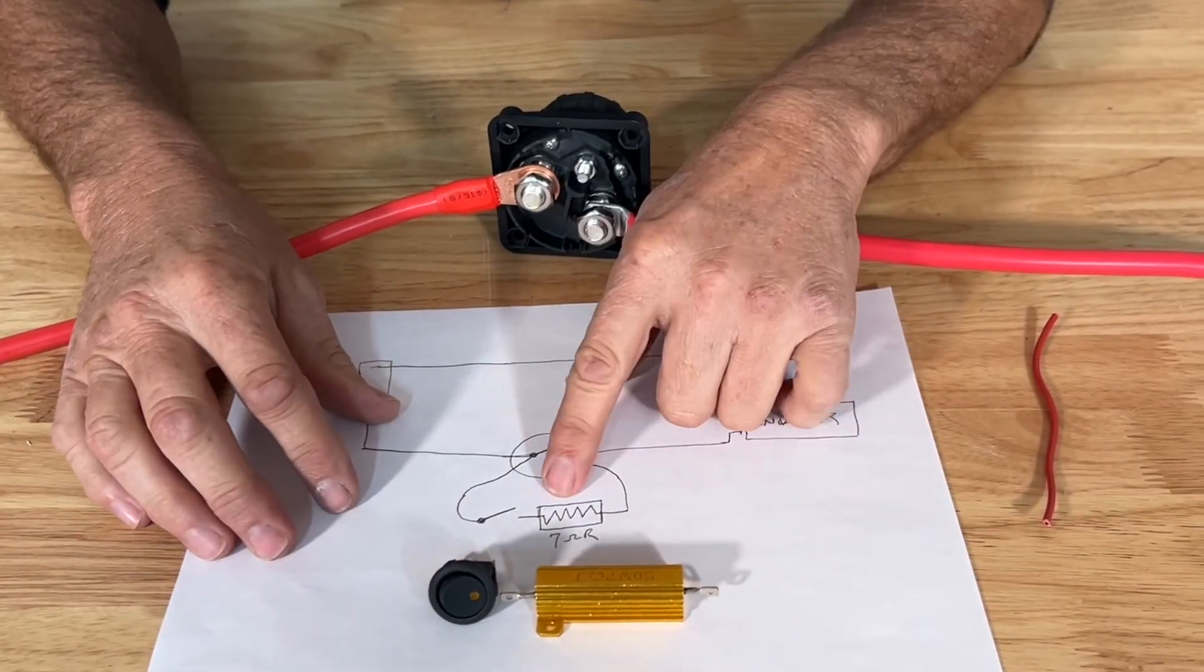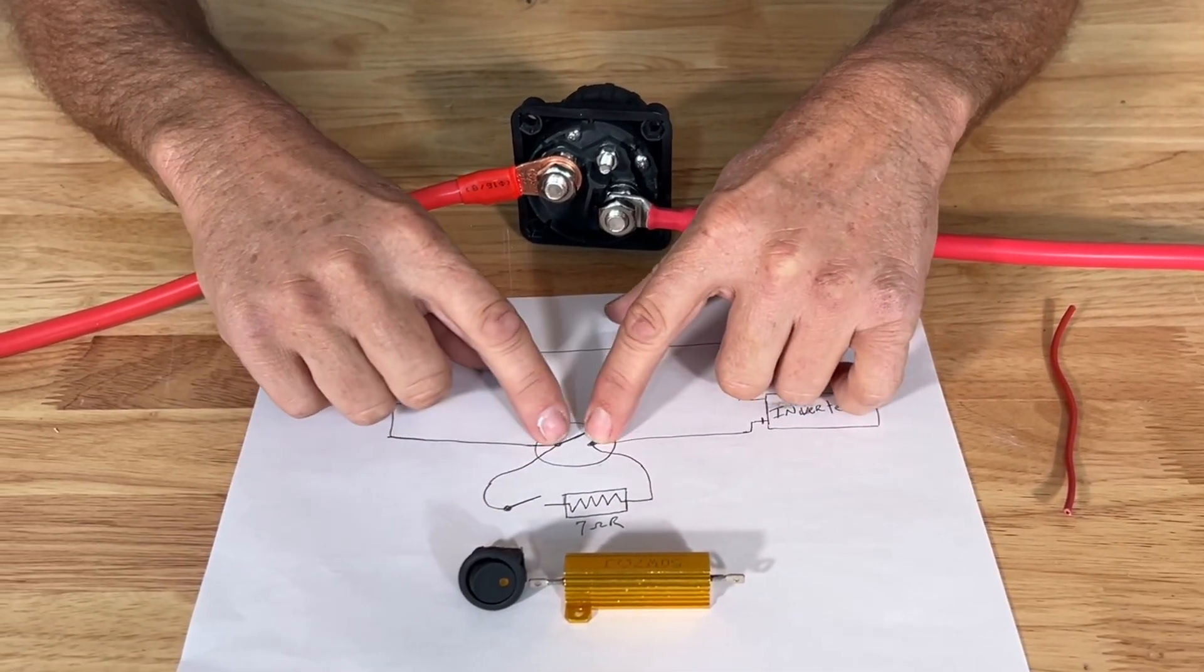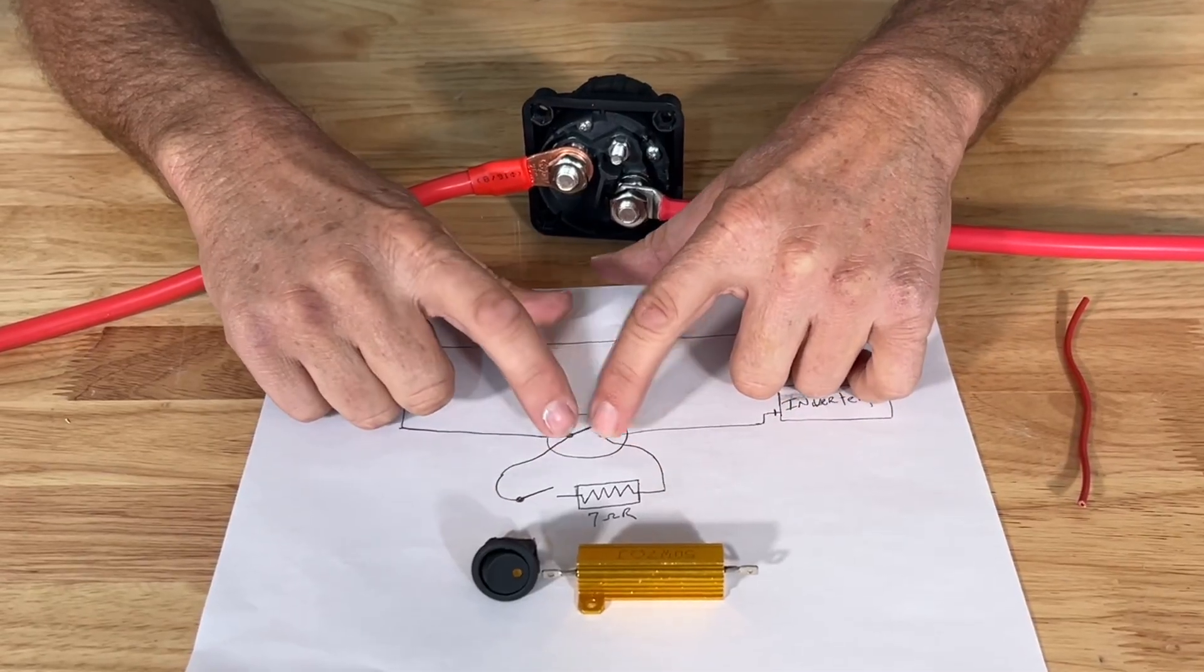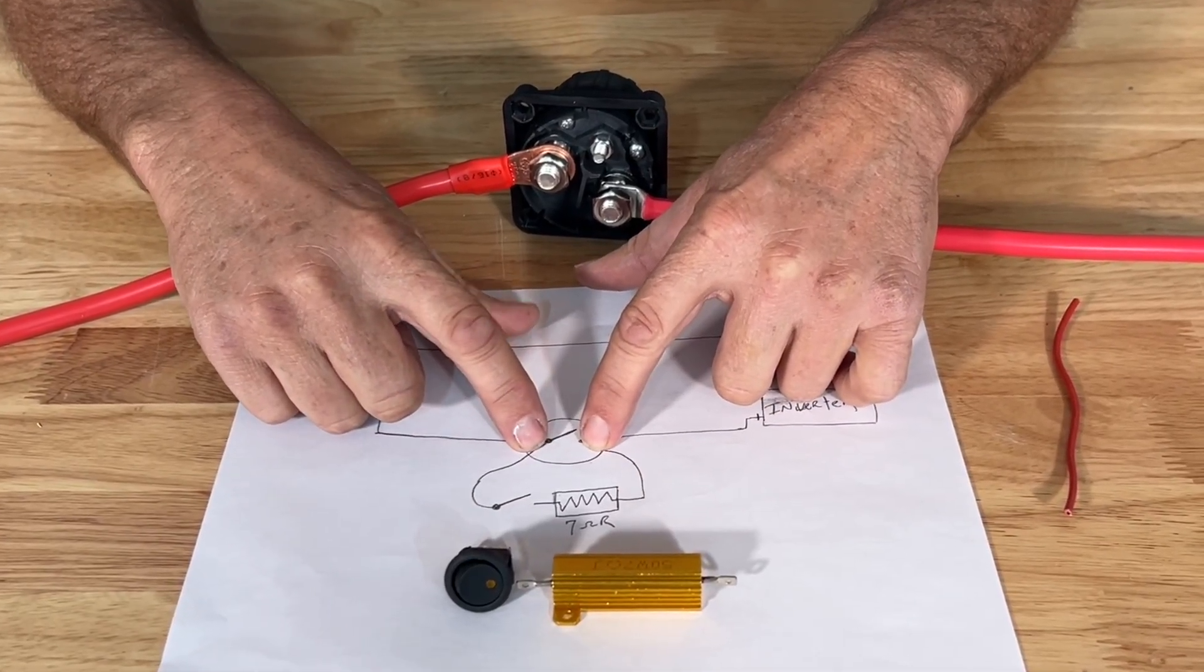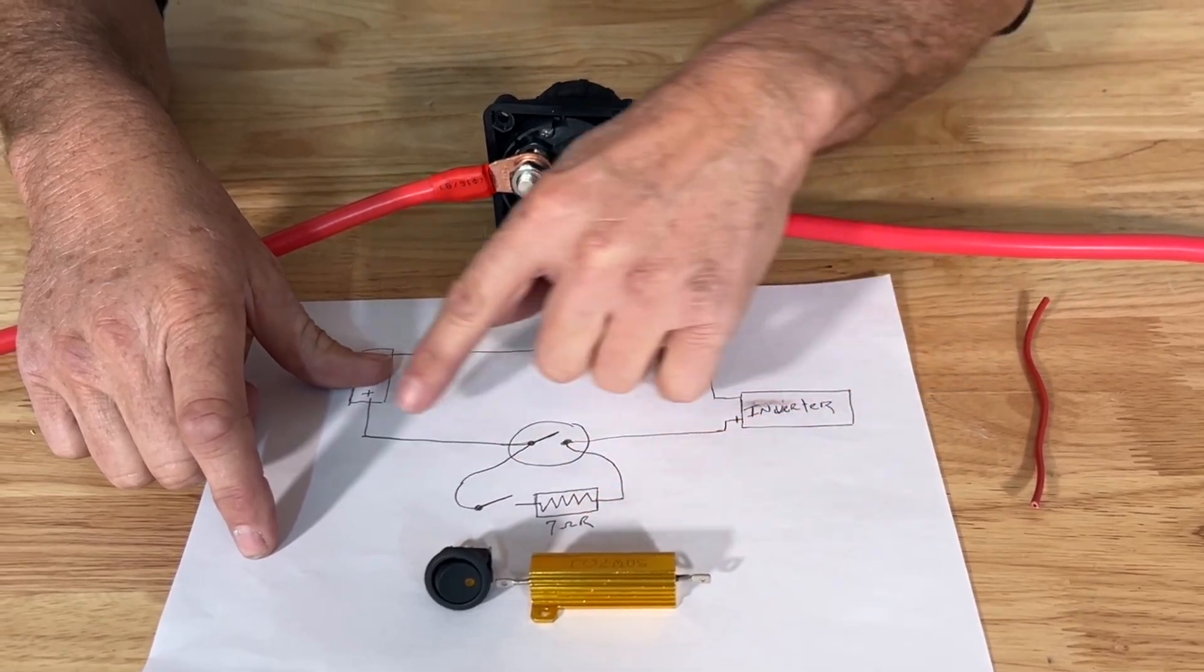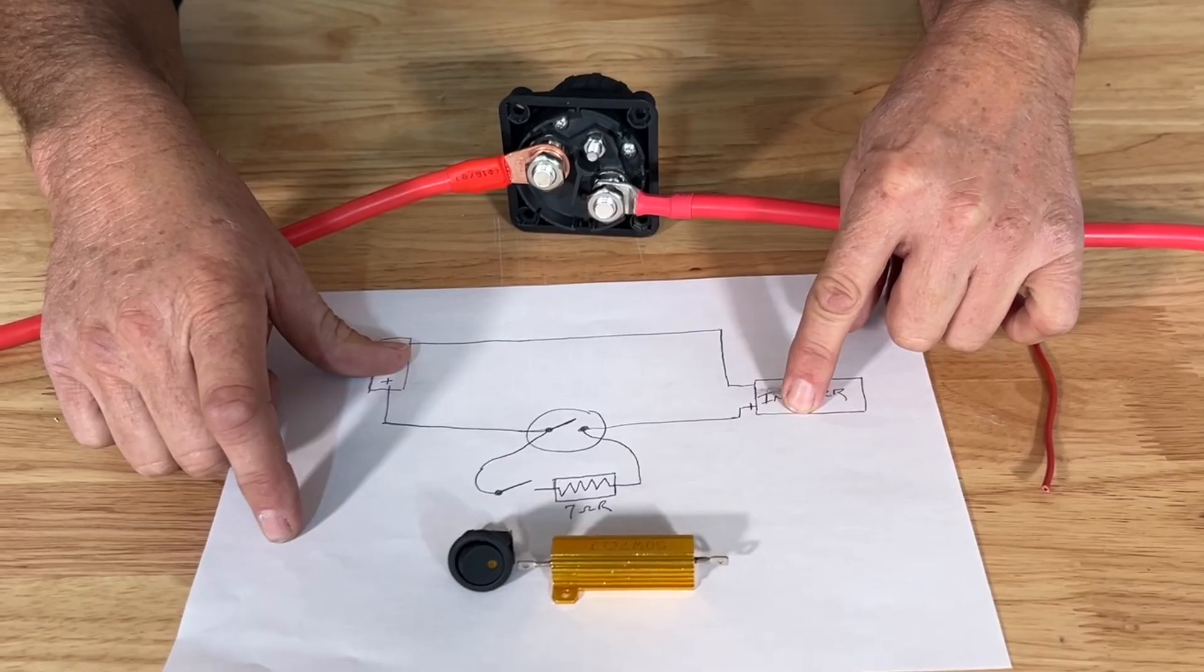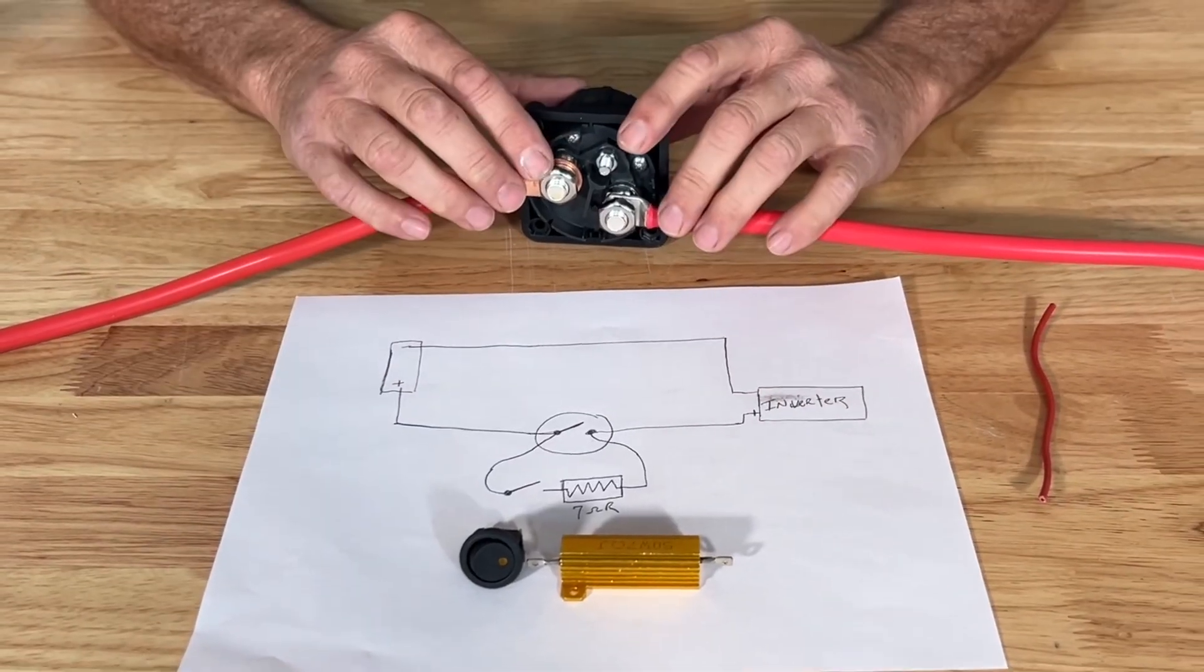So those are your 7 ohm resistor, your switch, and all you're doing is jumping this switch momentarily to prevent that inrush. So the power is going to come in, it's going to pre-charge the inverter, once that's done we can turn the switch on.